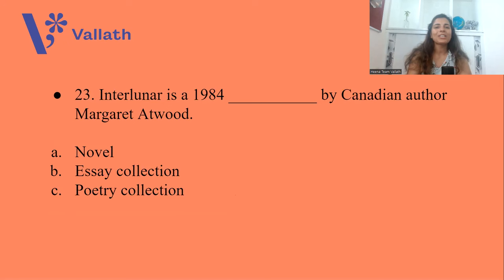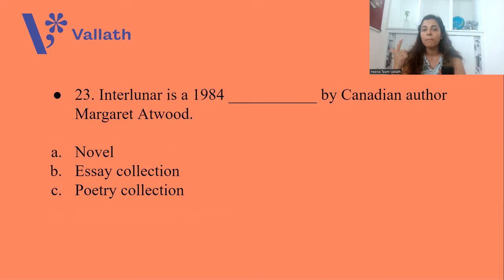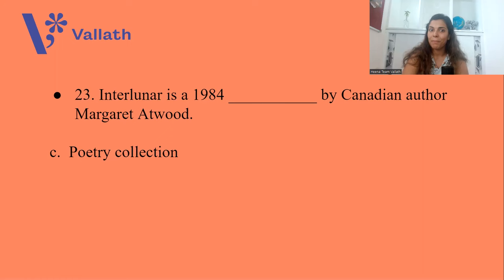Question number twenty-three: Interlunar is a 1984 work by Canadian author Margaret Atwood. Is it A. a Novel, B. an Essay Collection, or C. a Poetry Collection? Interlunar is a Poetry Collection, option C, from 1984 by Canadian author Margaret Atwood.